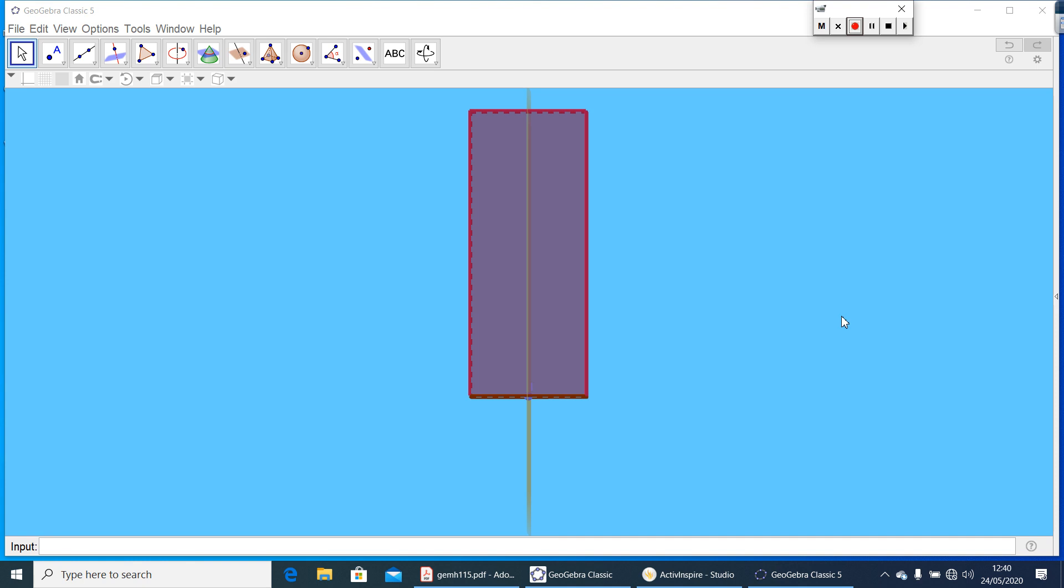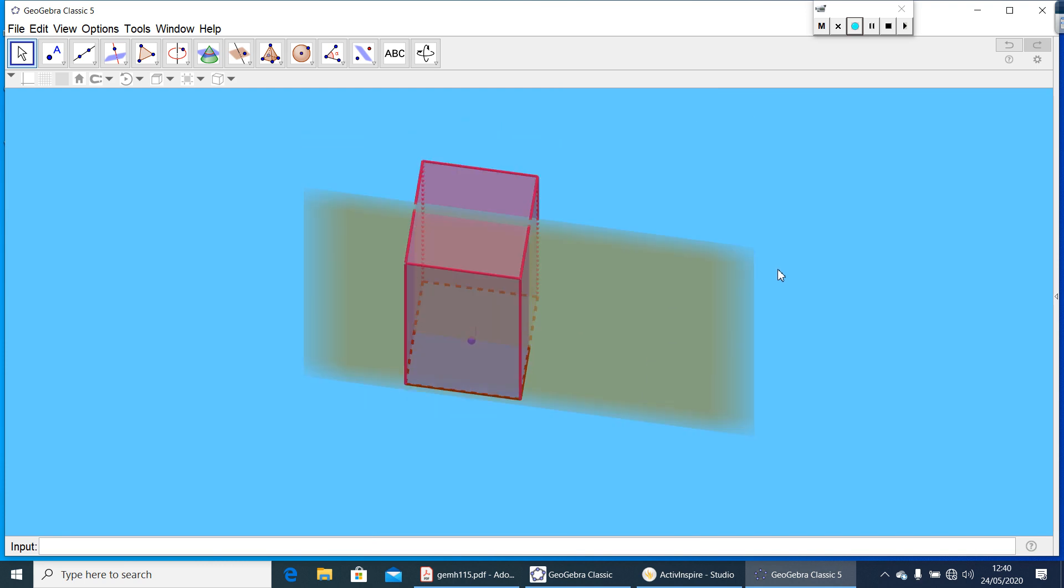Now, if you cut a cuboid vertically, what will be the cross-section? Let's see. Here, if you cut vertically, the cross-section also will be the shape of a rectangle. So, for a cuboid, the horizontal cut cross-section either can be square or a rectangle, and vertical cut, then also the cross-section will be a rectangle.